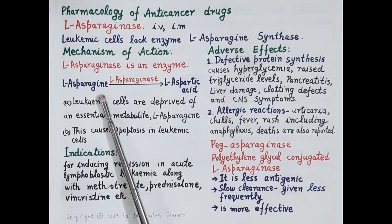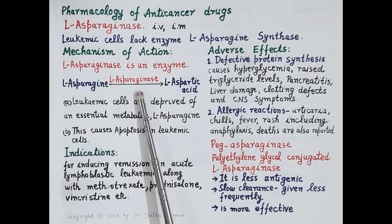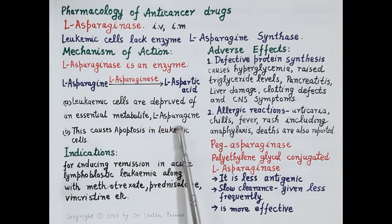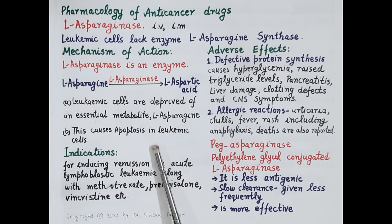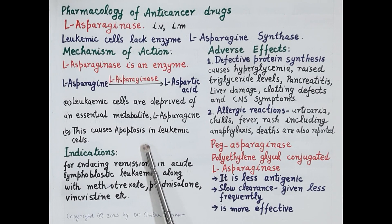Since leukemic cells cannot synthesize L-asparagine, whatever L-asparagine they obtain from an external source is also destroyed by this drug. Therefore, leukemic cells are deprived of this essential metabolite, cannot synthesize proteins, and this causes apoptosis or programmed cell death in the leukemic cells. This is the mechanism of action of L-asparaginase.